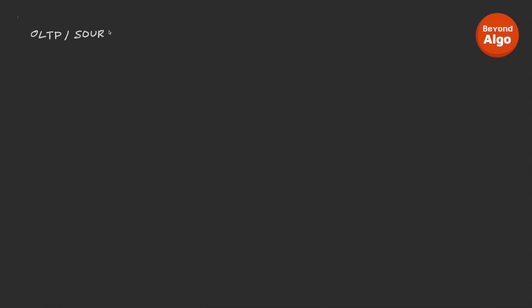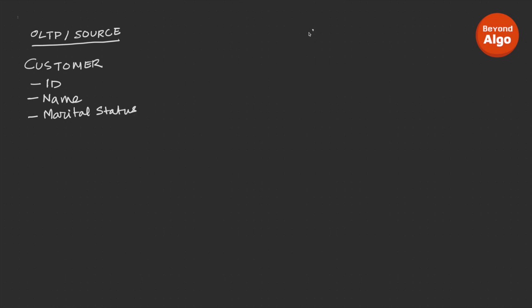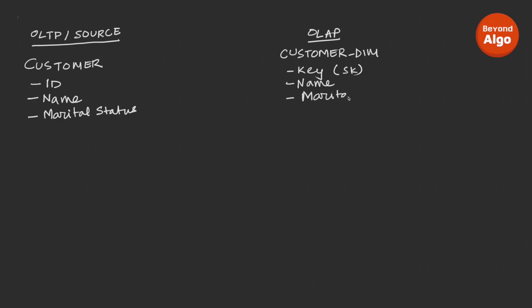Imagine your data is coming from an Online Transaction Processing (OLTP) system. You have a customer table on your OLTP system with three columns: customer ID, customer name, and marital status. You need to load this data into a customer dimension table in your OLAP system. Inside the OLAP system, the customer dimension table has a surrogate key called customer key, along with name, marital status, and the source ID from the OLTP system.